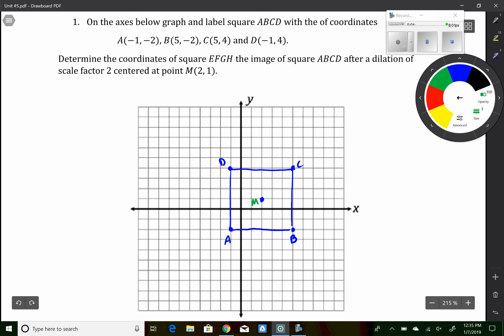So let's dilate point A. To get from M to A, I go down 3 to the left 3. So if I want to dilate it by scale factor of 2, I want to double that. So I'm going to go down 6 to the left 6. So there's A prime.